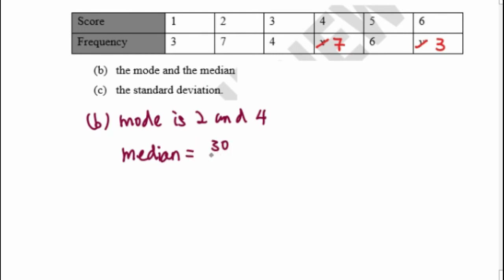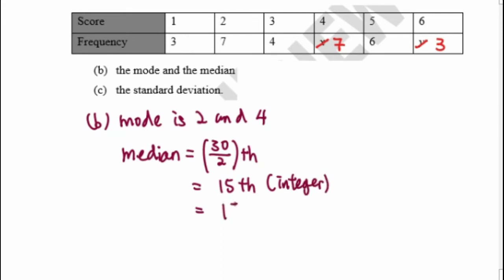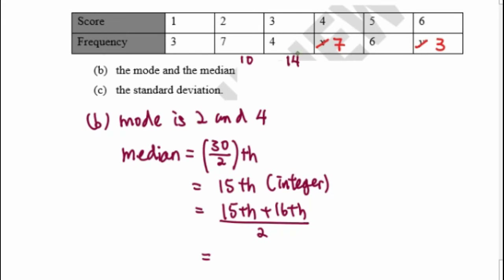For the median, we use the percentile concept. With 30 data points, 30 divided by 2 gives 15, so the median is located at position 15. Since this is an integer, the median is the average of data numbers 15 and 16. Cumulatively: 3, then 3 plus 7 equals 10, then 10 plus 4 equals 14. So data number 15 and 16 both fall at a score of 4, giving a median of 4.